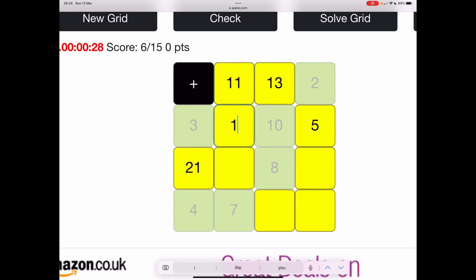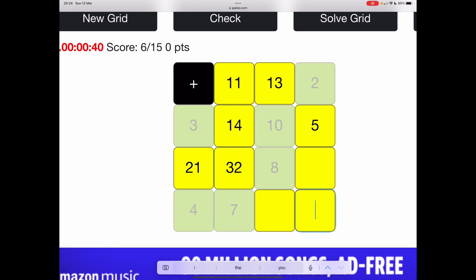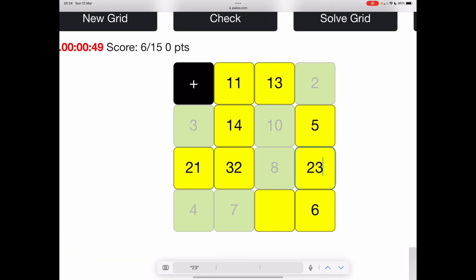Eleven plus twenty-one... twelve is thirty-two. Four plus two is six, twenty-one plus two is twenty-three, and the last one, four plus thirteen is seventeen. Let's hope I had a good score.